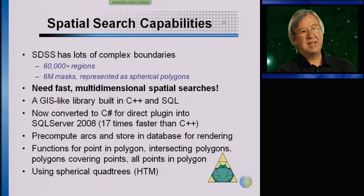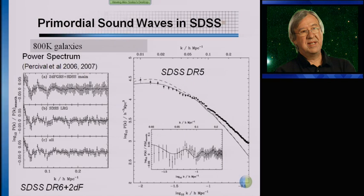Here is one example of a nice result done with the data from the database — the analysis of the distribution of galaxies in Fourier space. You can see these little wiggles in the spatial power spectrum of the galaxies. The wiggles are essentially the imprints of the resonance frequencies of the universe when it was about 300,000 years old. It was something we never thought we would be able to detect with the Sloan Digital Sky Survey, and it required a substantial amount of processing and careful identification of selection effects to get such an accurate result.